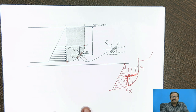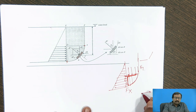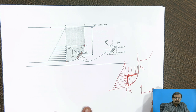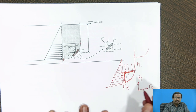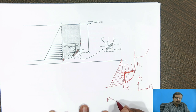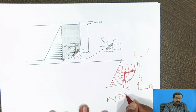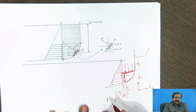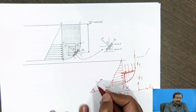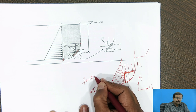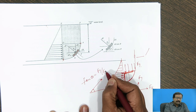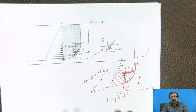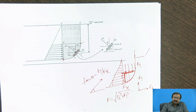Fx and Fy are always mutually perpendicular. So the resultant force is √(Fx² + Fy²), and the angle at which it operates is given by tan θ = Fy/Fx. It is a fairly simple calculation, and we must know how to find the pressure that is gradually increasing as we move down.